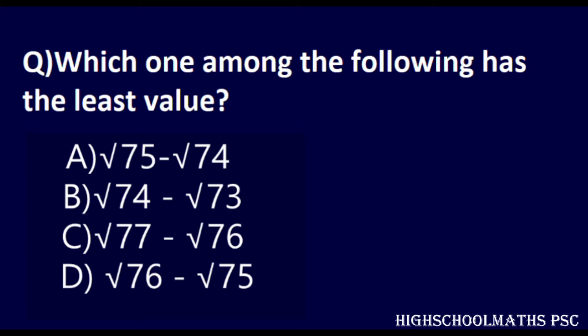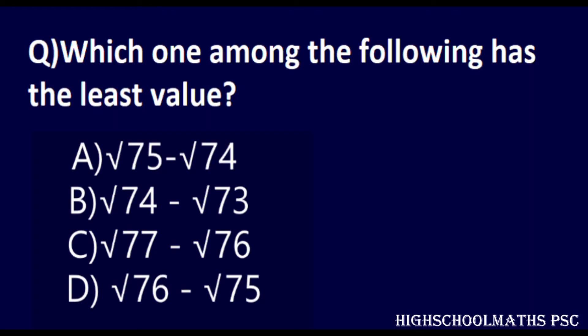This is the first question. If you want to answer the second question, you don't need to calculate the calculation. We are looking at this trick. Let's see how we can do this question. The question is: which one of the following elements has the least value? We have four options. Option A is √75 − √74, option B is √74 − √73, option C is √77 − √76, and option D is √76 − √75.